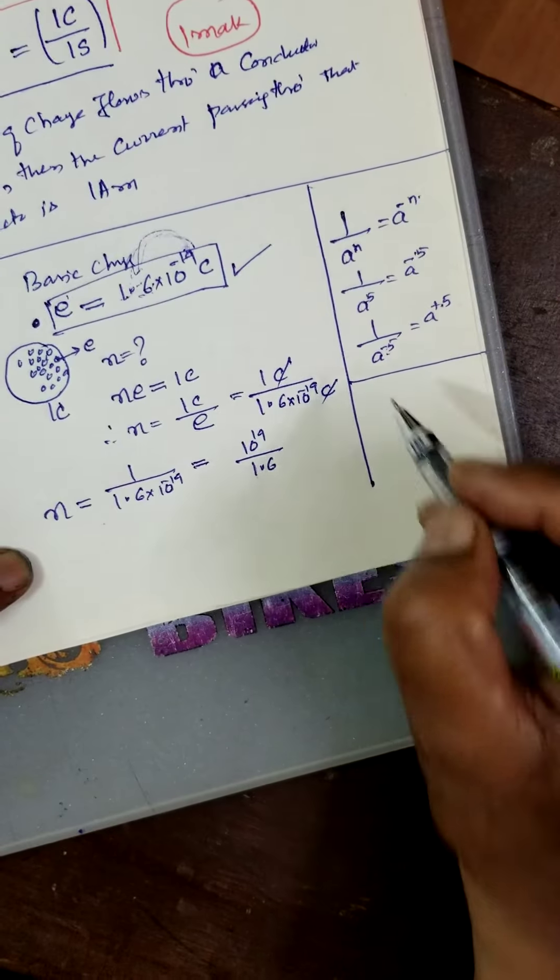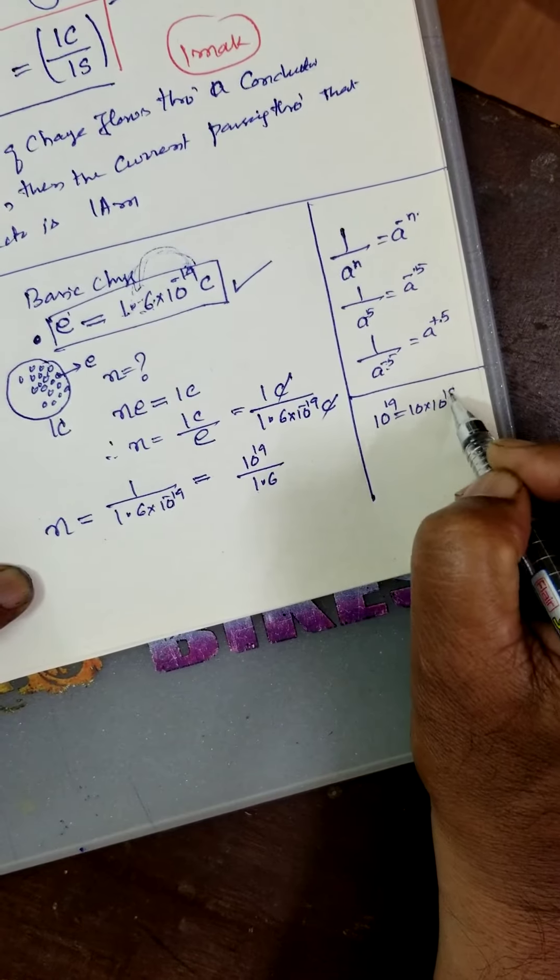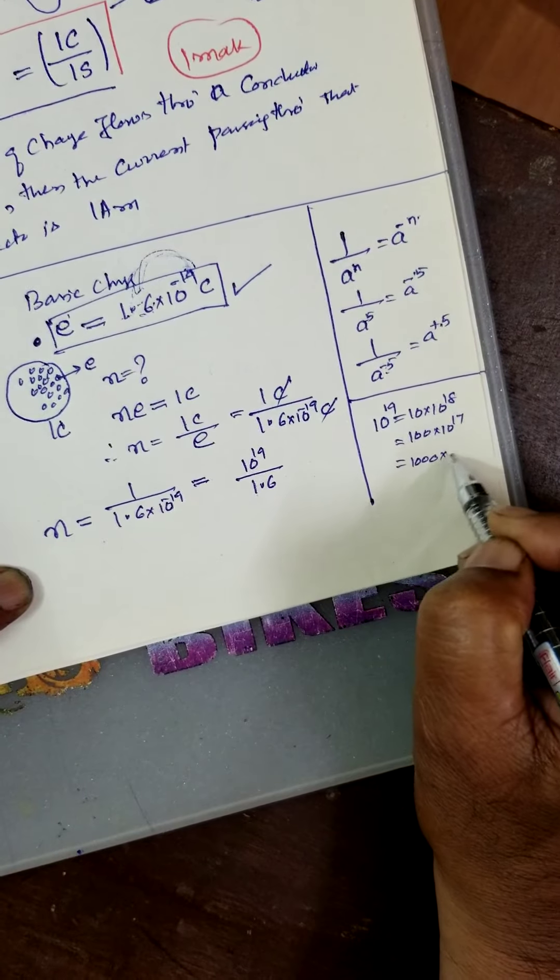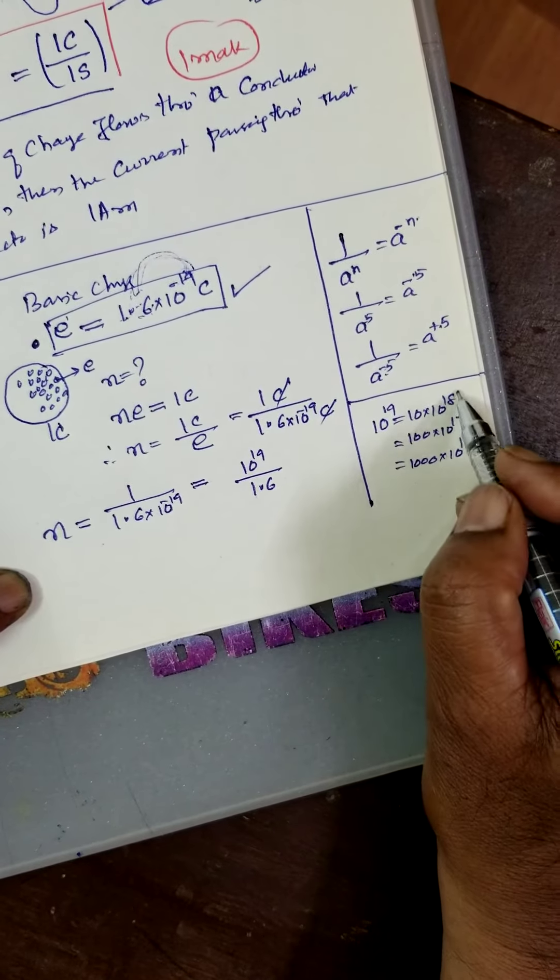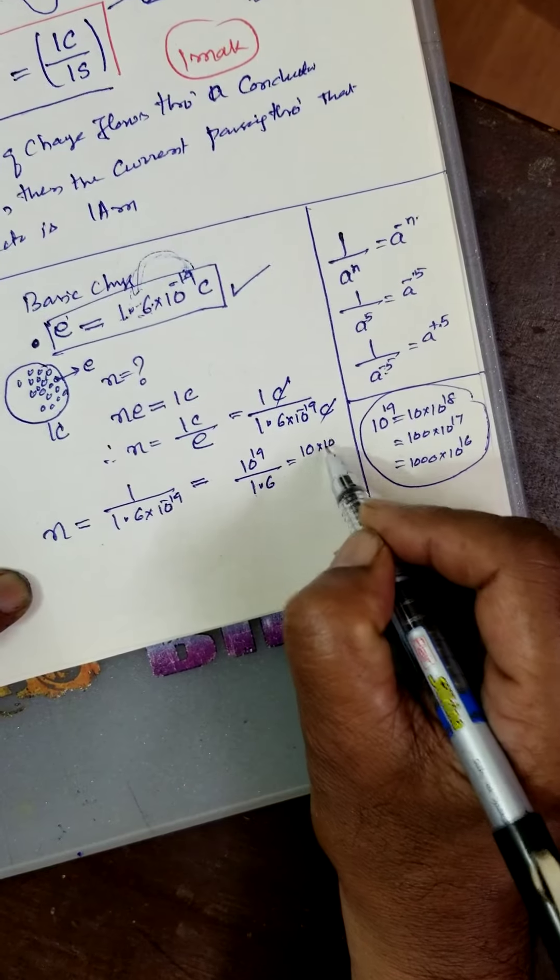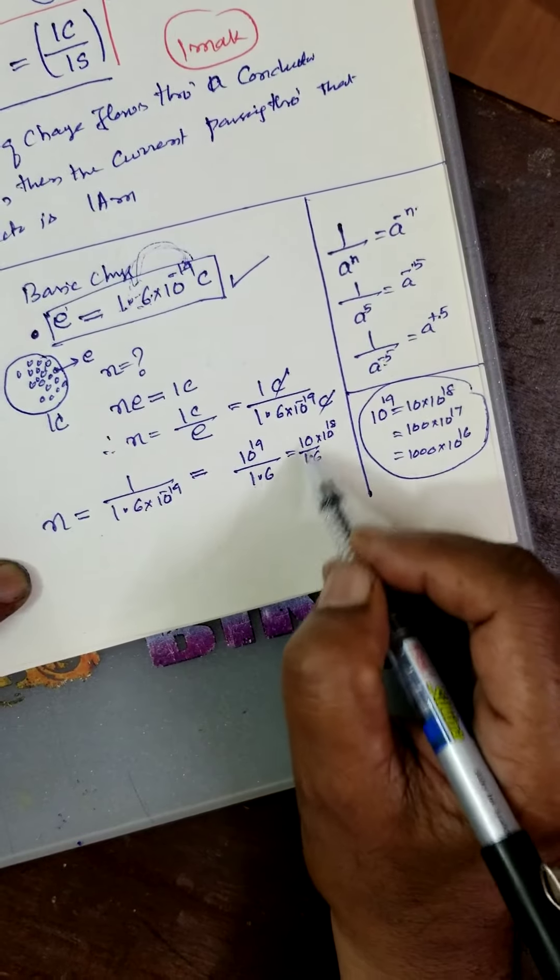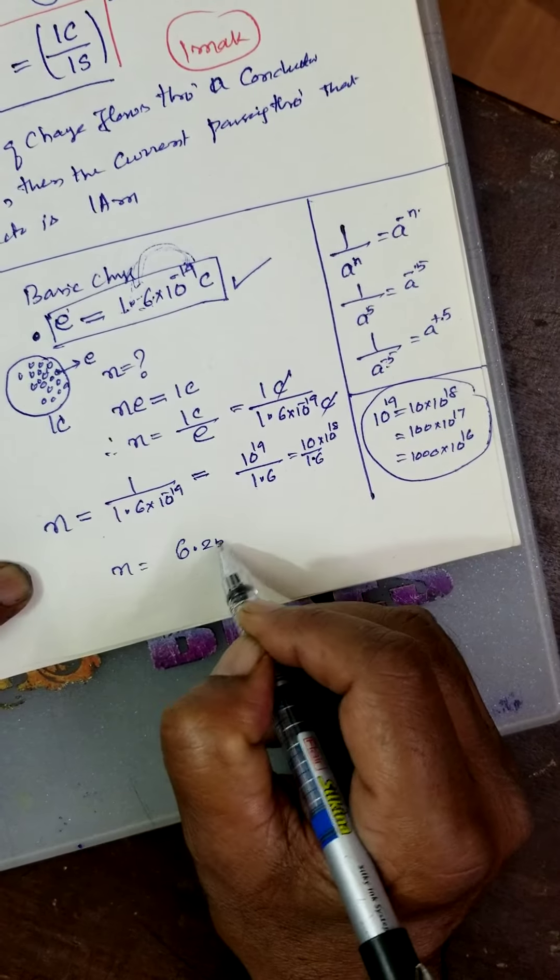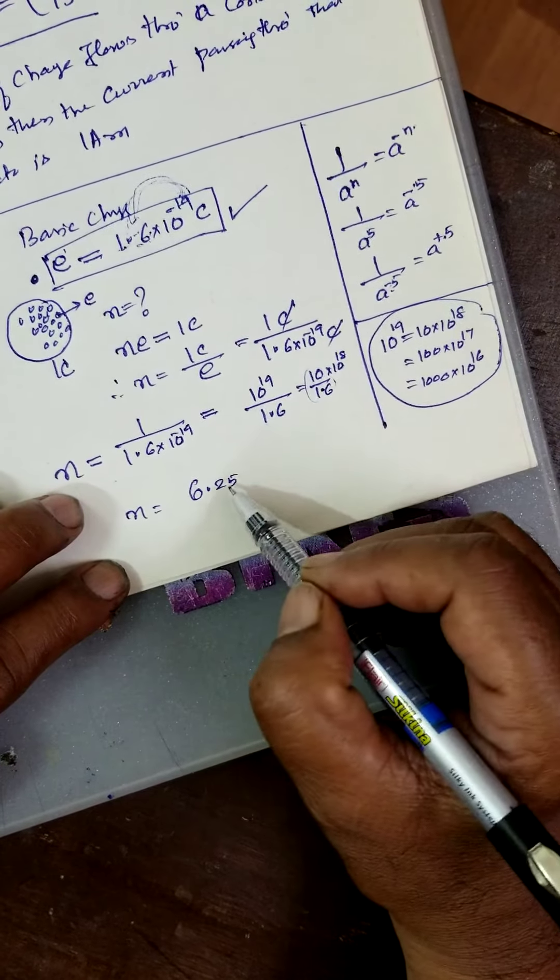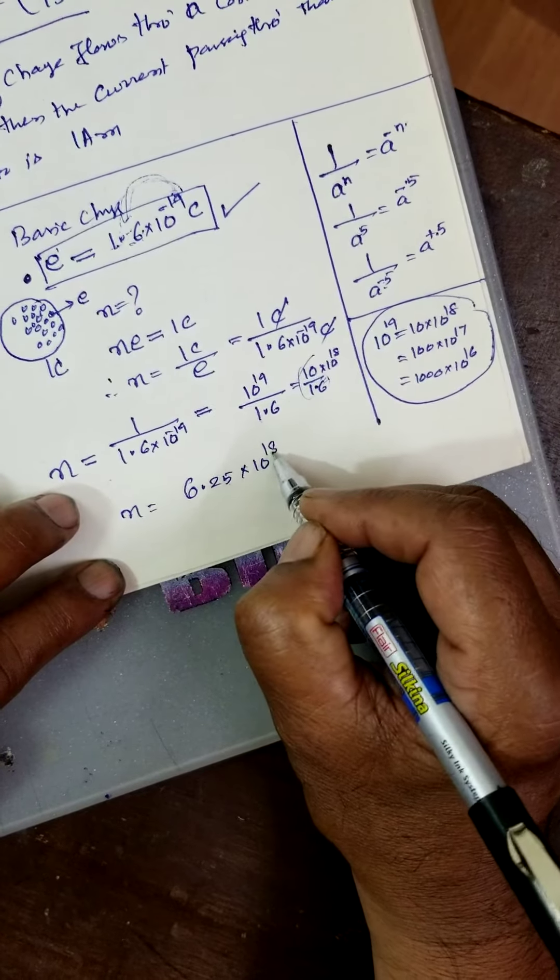Now, 10 to the power of 19 can be written as 10 into 10 to the power of 18, or 100 into 10 to the power of 17, or 1000 into 10 to the power of 16. As you release ones, the power keeps decreasing. Therefore, what I do is, I release one zero, 10 into 10 to the power of 18 divided by 1.6. Then, I calculate 1.6. Number of electrons is 6.25. After calculation, if you use the calculator, I remember the value, just I am writing it. If you calculate using calculator 6.25.